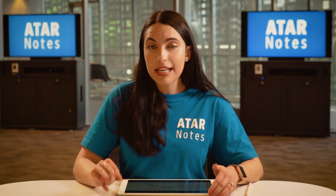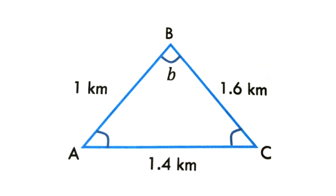To use the cosine rule, we need to have three sides and one angle. If we look at the diagram here, we can solve for b because we have three sides and one angle.